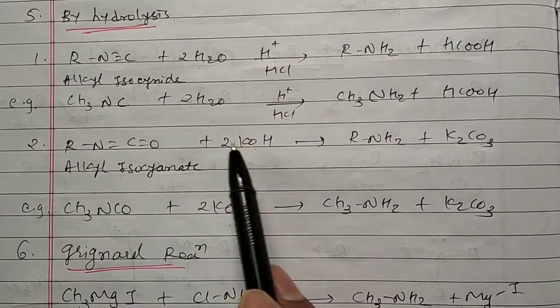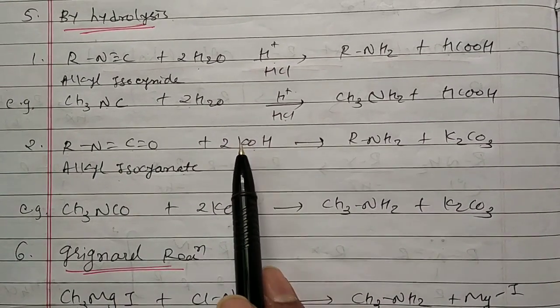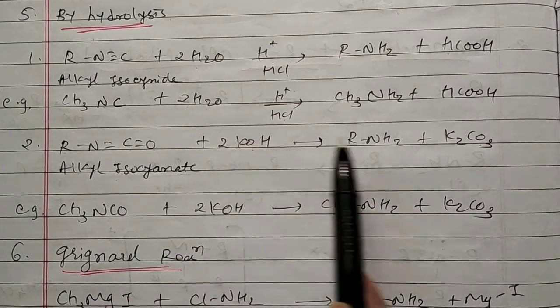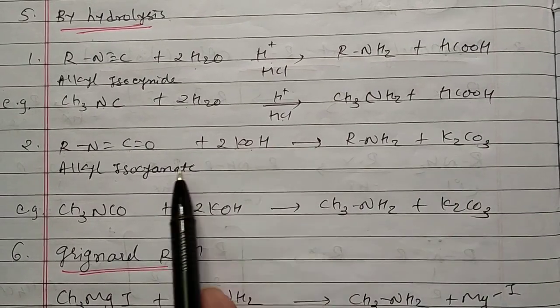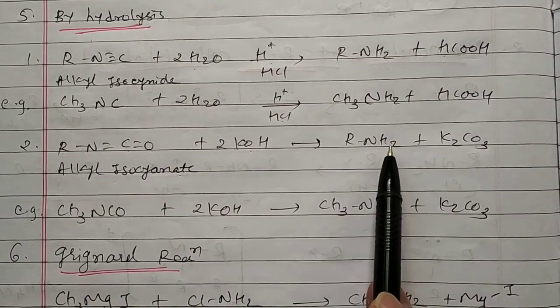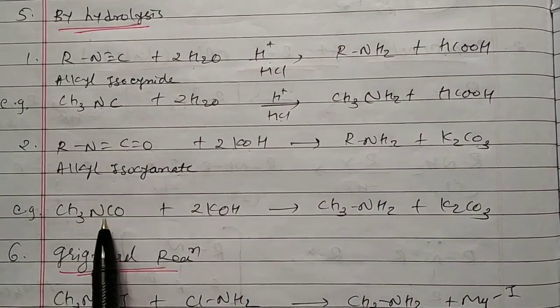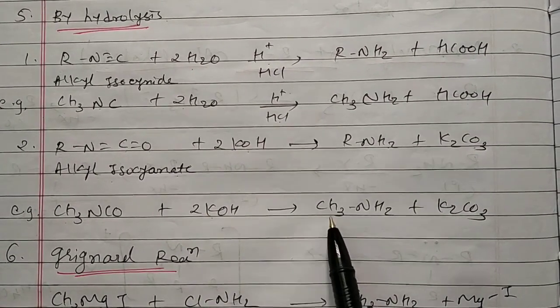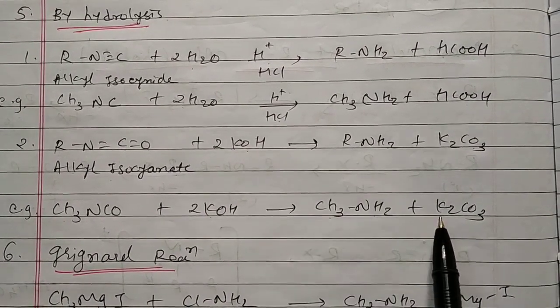Once again, R-N-C-O in the presence of strong base KOH, 2K, NCO and O, K2CO3 is your byproduct and H goes with N, you get R-NH2. So CH3-N-C-O, 2KOH, you get CH3-NH2 plus K2CO3.